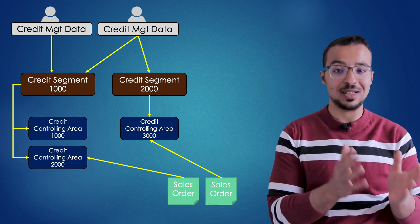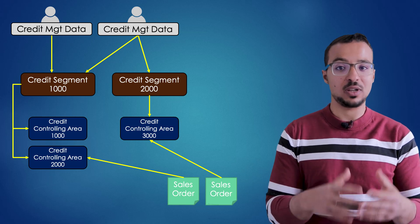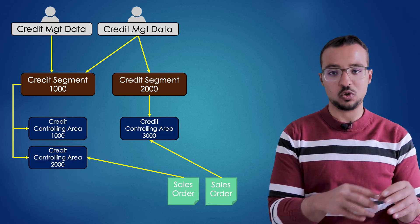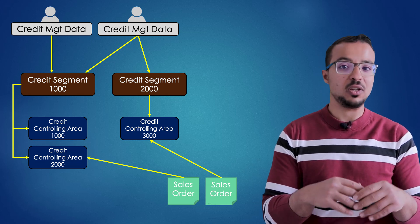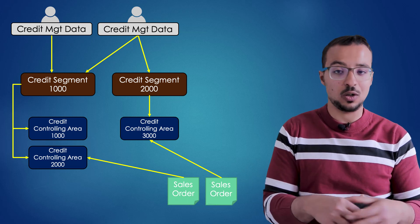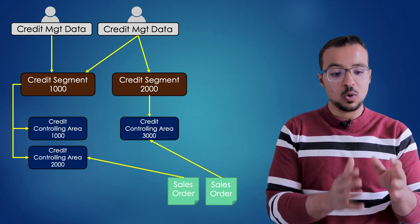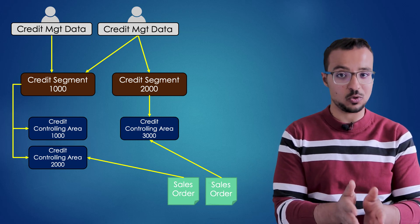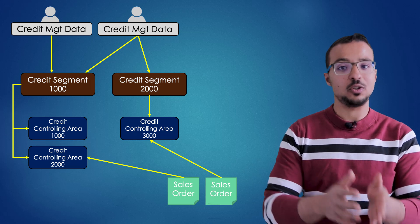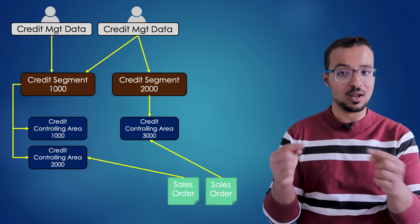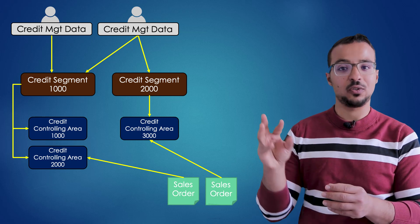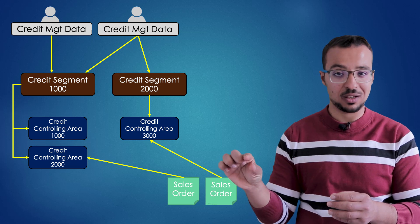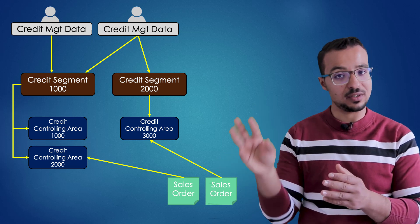When we perform any sales transaction, SAP automatically determines the credit controlling area based on configuration. This is a very dynamic configuration activity — the credit controlling area can be different based on the sales organization, the distribution channel, or the division. SAP then determines the credit segment from the link between the credit controlling area and the credit segment, and finds the credit management details for the business partner or customer. The master data of the customer is maintained on the credit segment level.